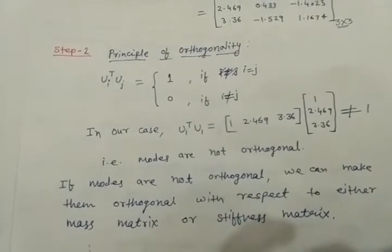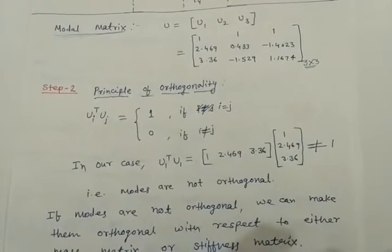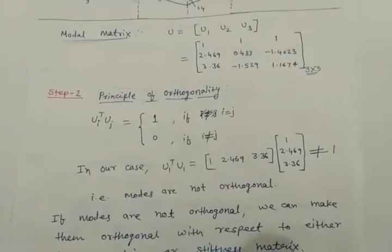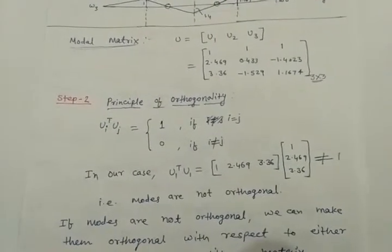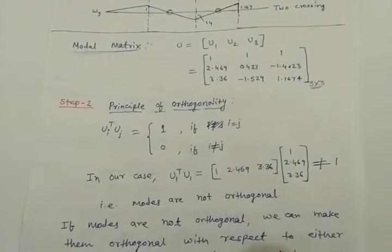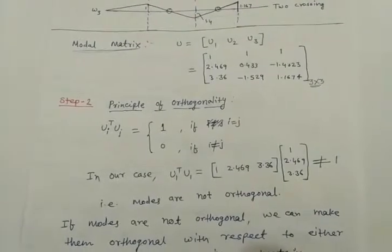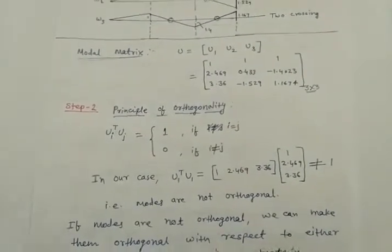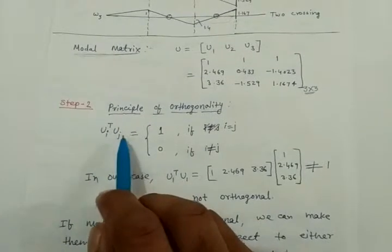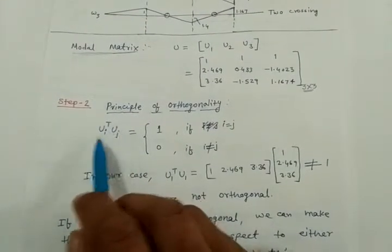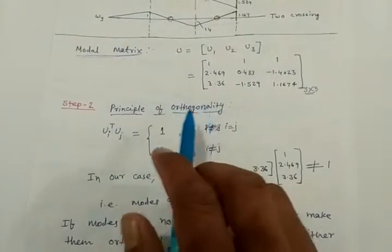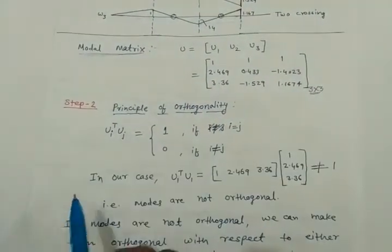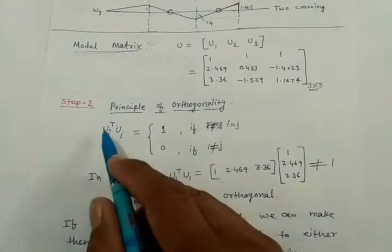Now come to the second step. Our first step was to calculate the natural frequencies and mode shapes or eigenvectors. Now our second step is the principle of orthogonality. What orthogonality means is simply that two vectors ui and uj are perpendicular to each other. That is the simple meaning of orthogonal — perpendicular to each other.